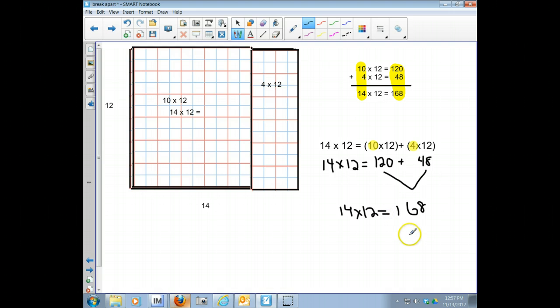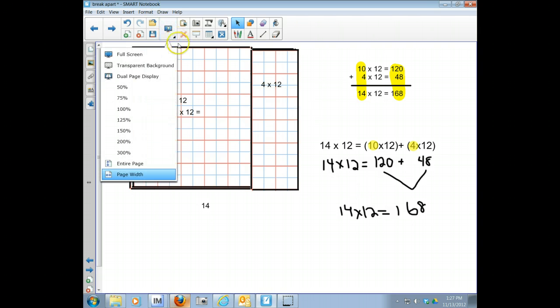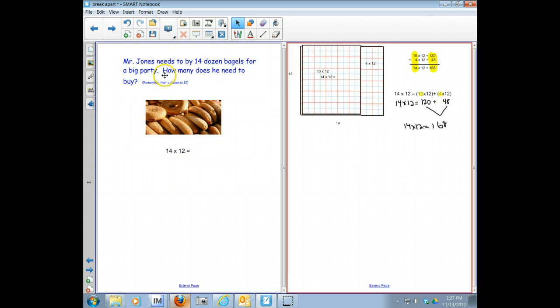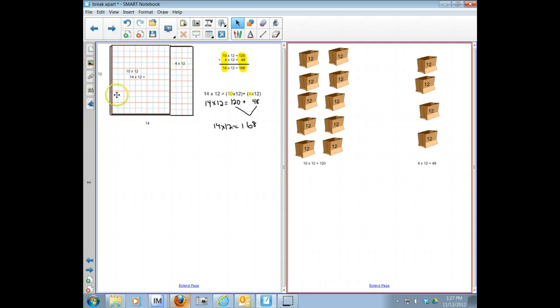So now that we've broken apart this problem, I want to show you how it looks in a picture representation. I'm going to go to the split view so you guys can see two pages at once. So here's the equation. Now imagine that these bags were full with 12 bagels each.